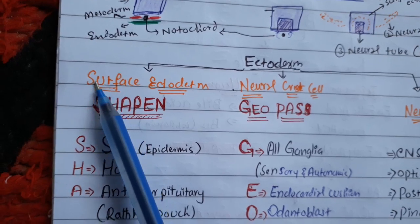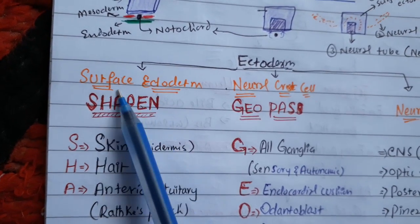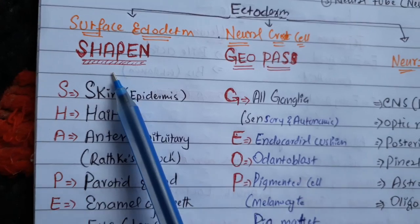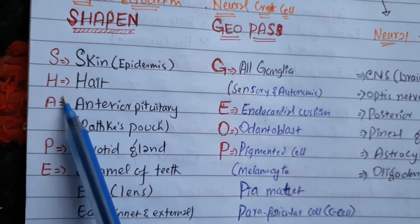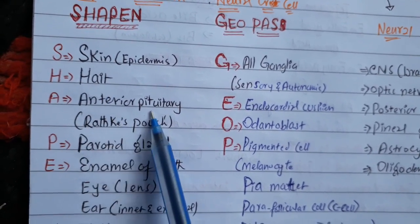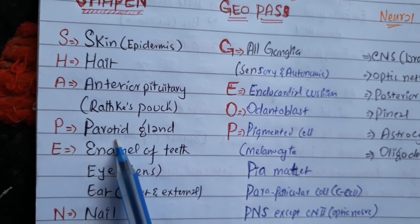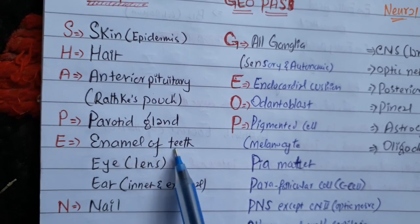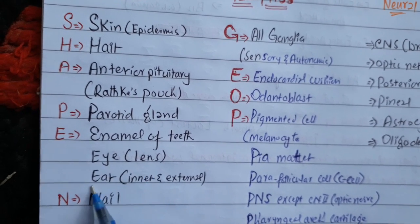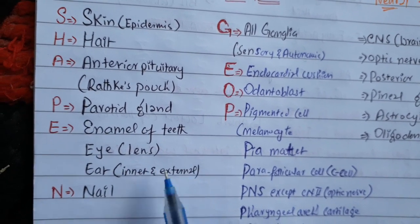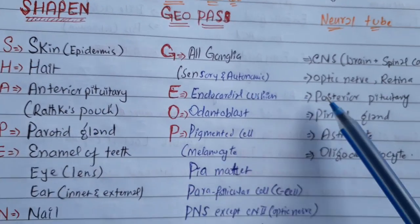For the surface ectoderm, the mnemonic is SHAPE IN — like 'surface' as in 'shape.' S is for skin epidermis, H is for hair, A is for anterior pituitary which is called Rathke's pouch, P is for parotid gland, E is for enamel of the teeth, E is for the eye lens, E is for the ear — inner and external ear — and N is for nail. Remember: SHAPE IN.